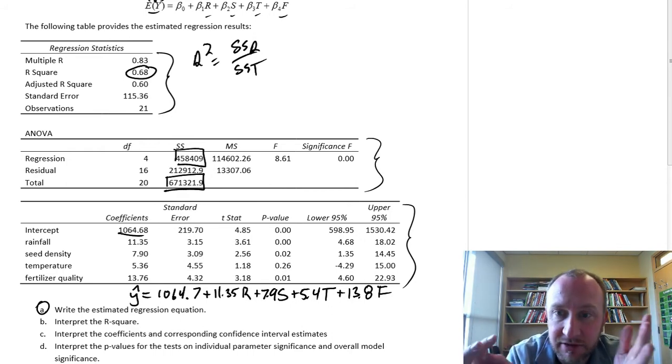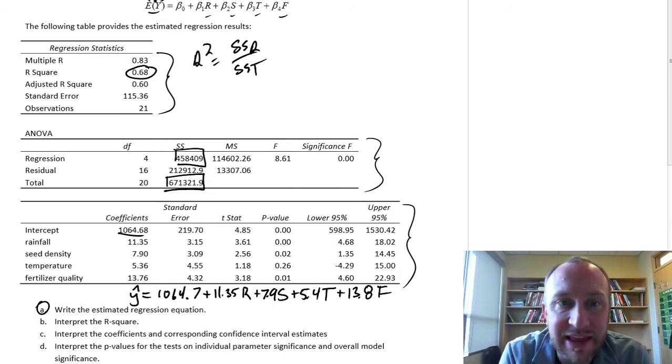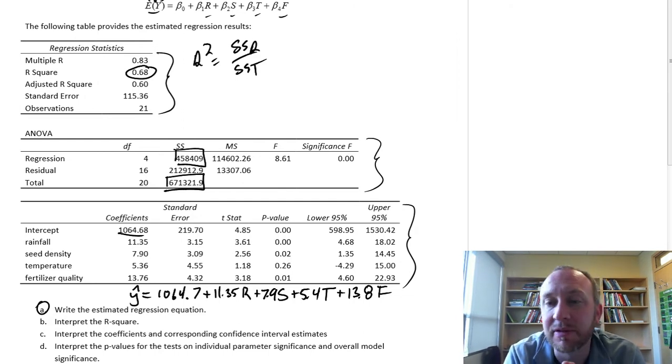the chosen independent variables in our model, so rainfall, seed dispersion, temperature, and fertilizer quality, those independent variables, they capture together 68% of the variation in wheat yield.